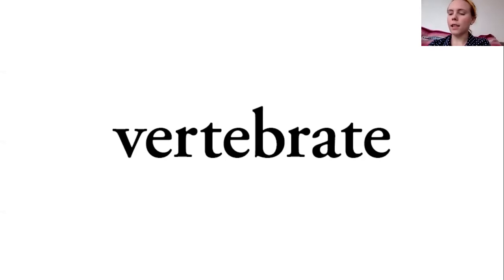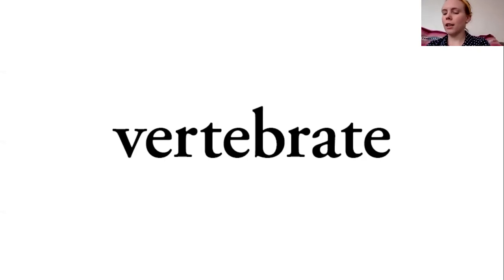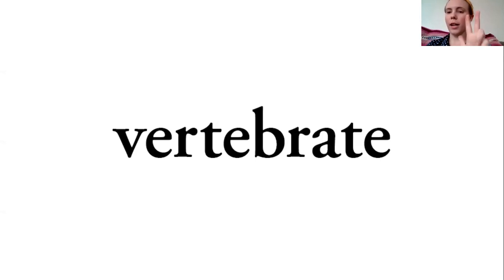I see V is a consonant, E is a vowel — underline it. R is a consonant, T is a consonant, E is a vowel, B is a consonant, R is a consonant, A is a vowel. The E on the end will not make a sound but it might change the sound of another vowel in our word. So vertebrate has three vowel sounds, three syllables: ver-te-brate.